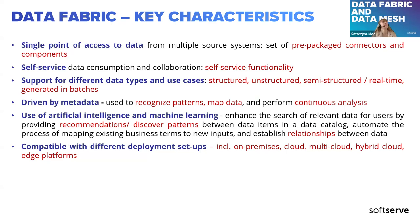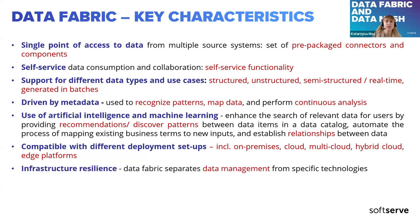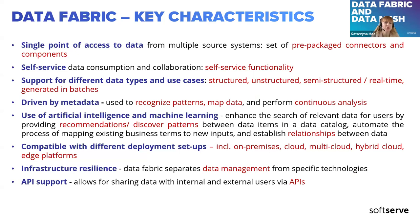Whatever architecture setup a company comes in with, they don't need to change it — they simply integrate the data fabric layer on top. Deployment setups can be varied and include on-premise, cloud, multi-cloud, hybrid cloud, edge platforms, and many others. Infrastructure resilience separates data management activity from specific technologies. API support allows sharing data with internal and external users via APIs, providing flexibility and enabling extraction of domain-specific data for specific groups of users.